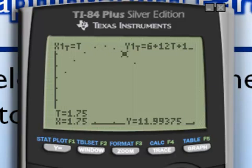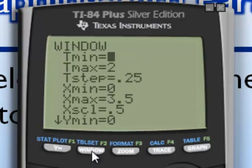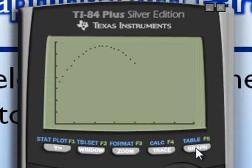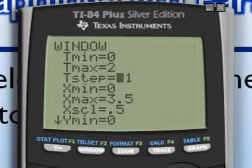If you wanted more precision or more accuracy in your graph, you might want to, instead of going to quarter second intervals, you might want to make this tenth of a second intervals. Now when I hit graph, notice there are more points. If you wanted the best graph in the world, maybe you would change it to thousandth of seconds intervals.